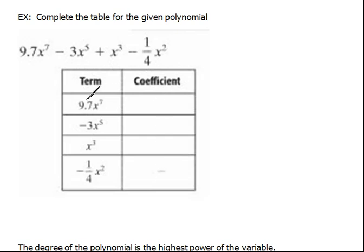So looking at this first term which is 9.7x to the seventh power, the coefficient would be 9.7. Remember your coefficient is just the number in front of the variable term. And it's quite alright for it to be a decimal, that's not a problem.